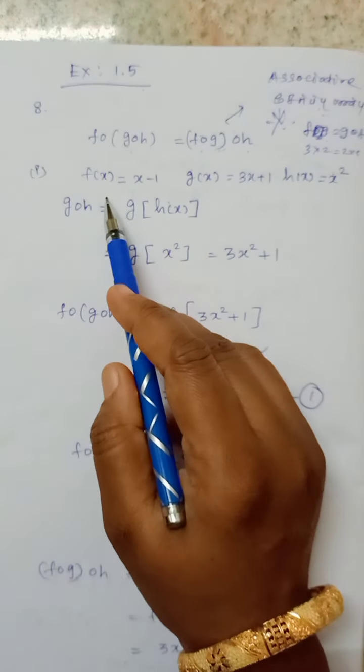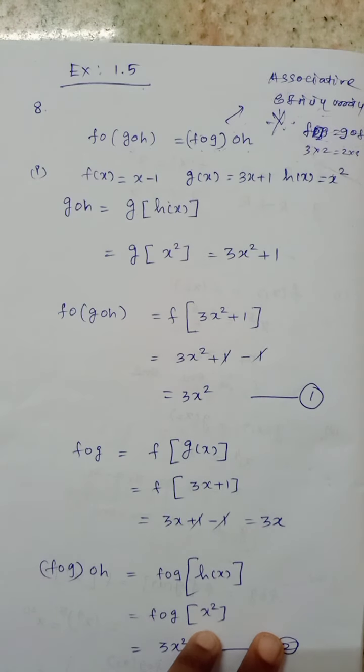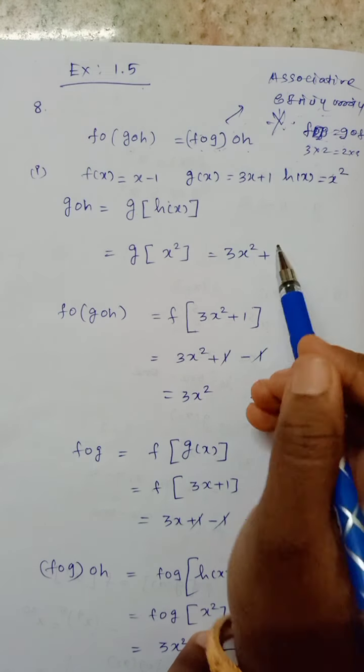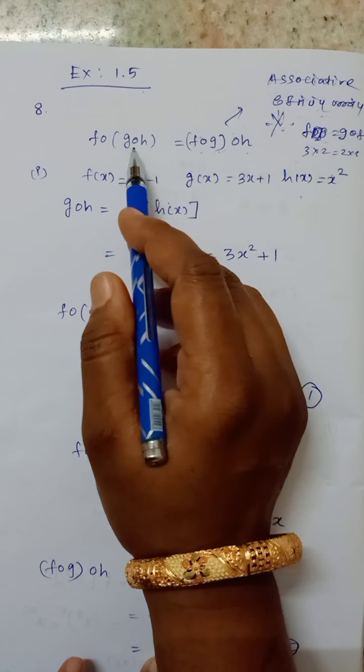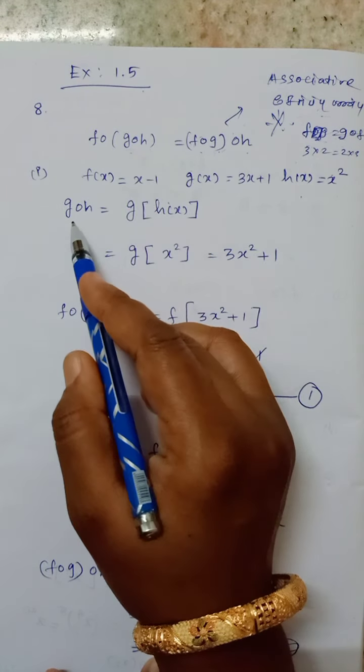So f of x is equal to x minus 1, g of x is equal to 3x plus 1, and h of x is x square. So first bracket is equal to g∘h.